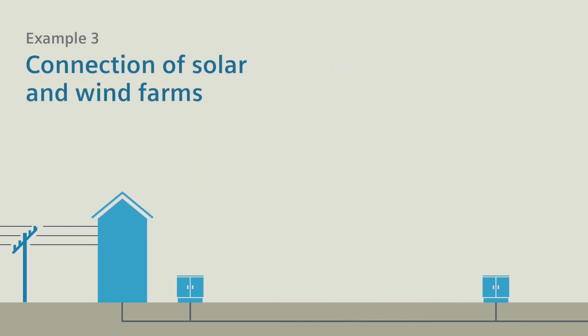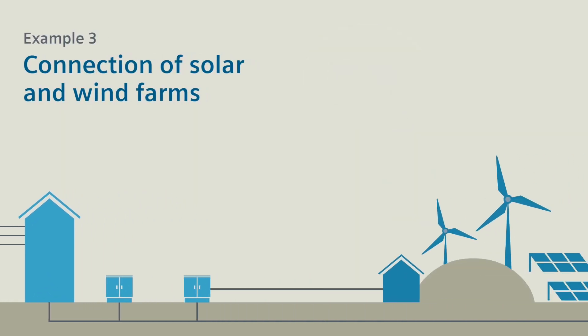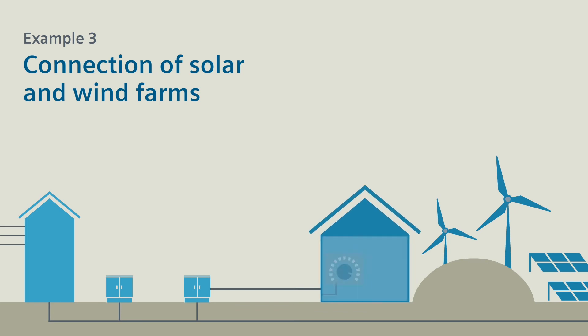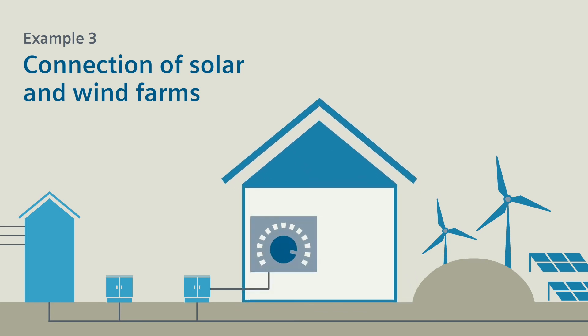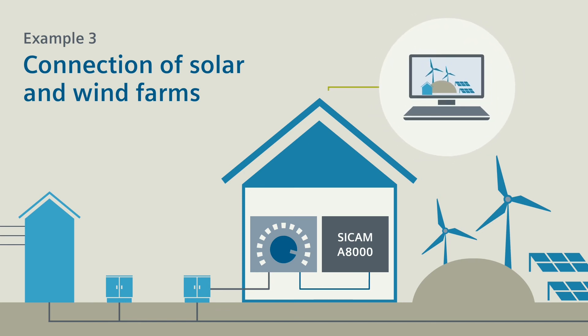Example 3 – Connection of Solar and Wind Farms. Solar and wind farms are connected to the energy grid via infeed controllers. A device from the CCAM A8000 series connected to this controller is the bi-directional link between farm and network control center.